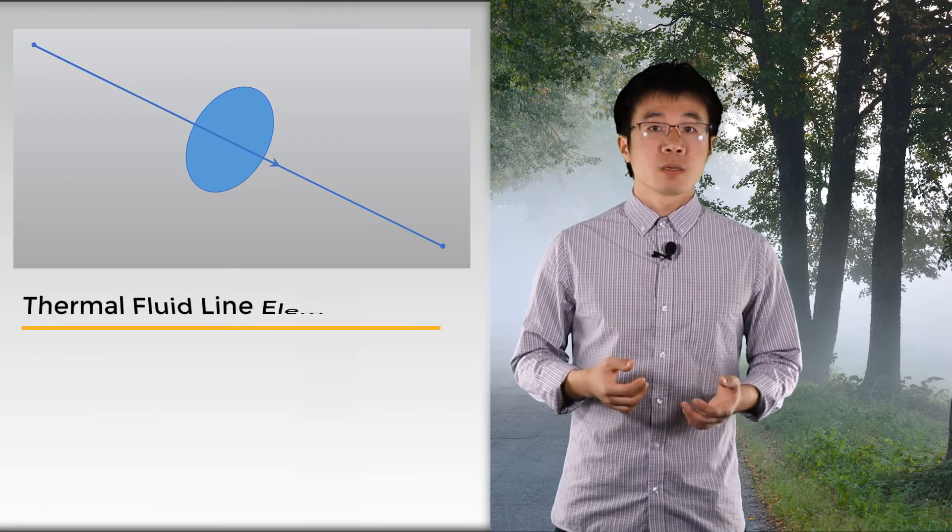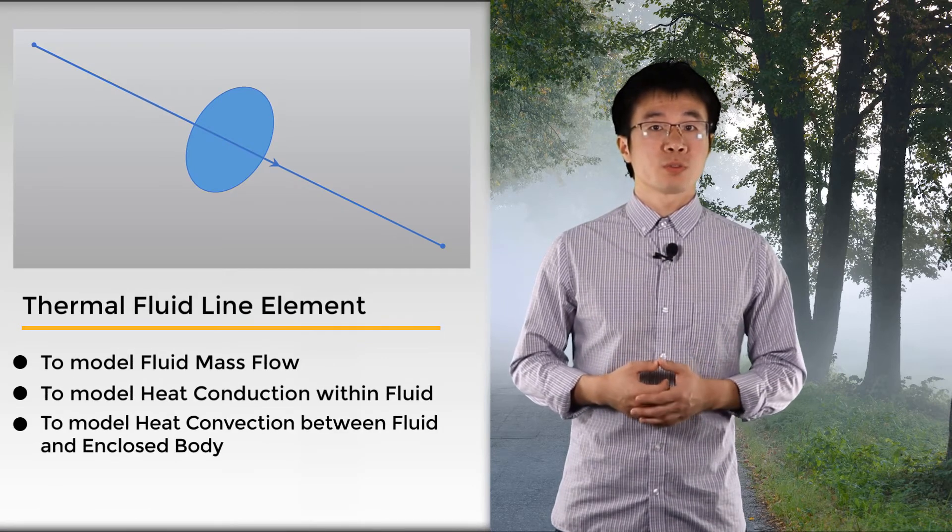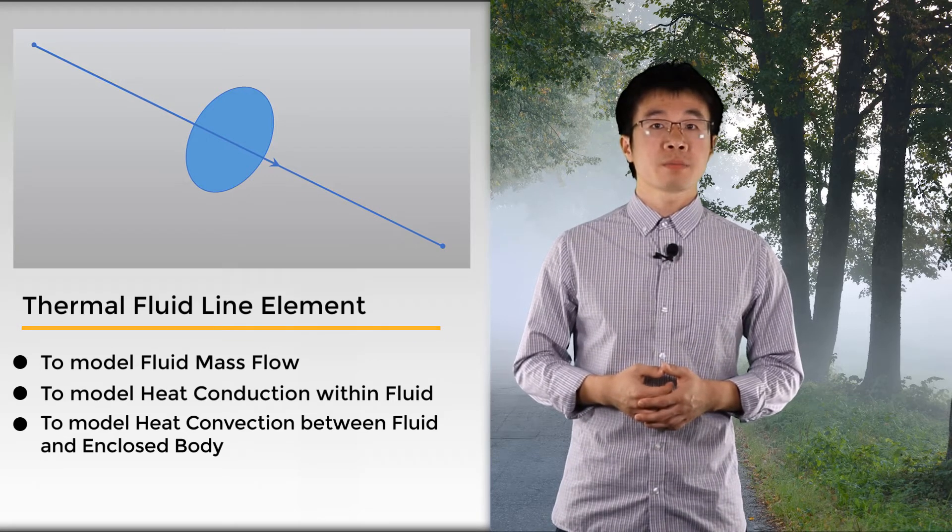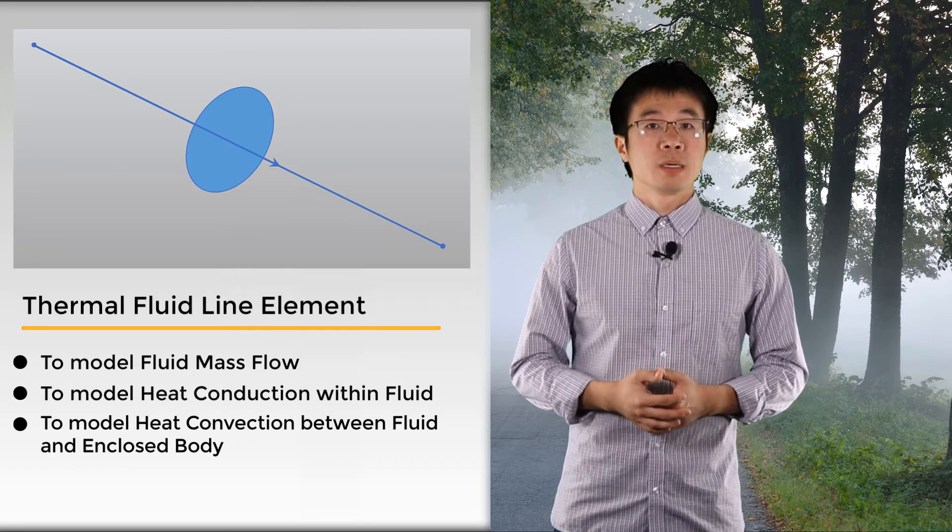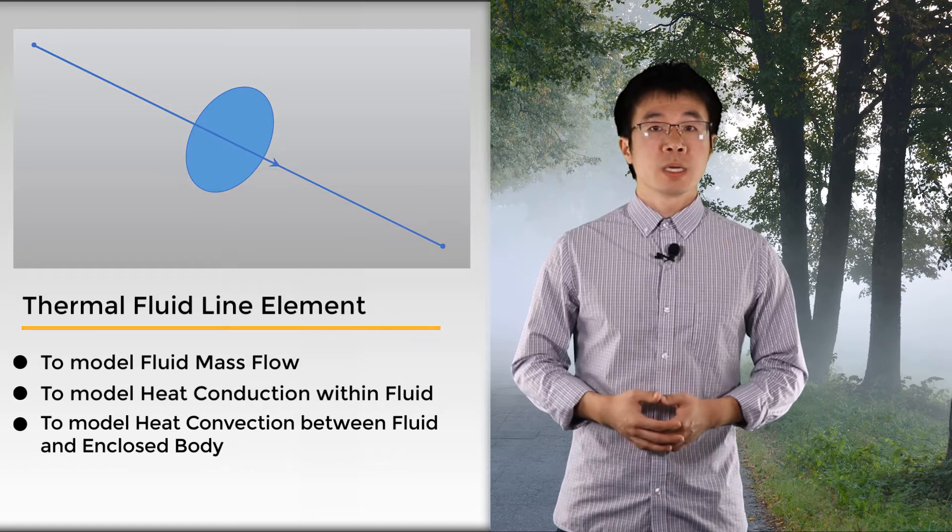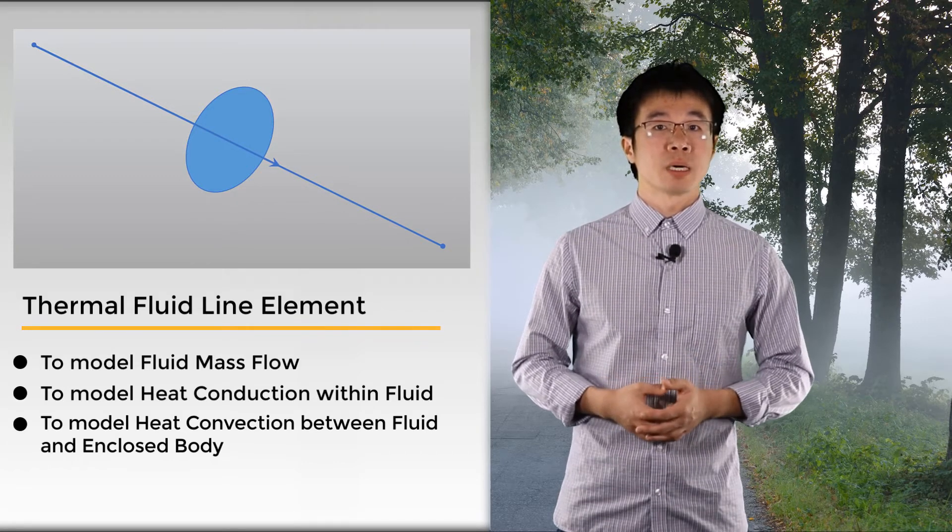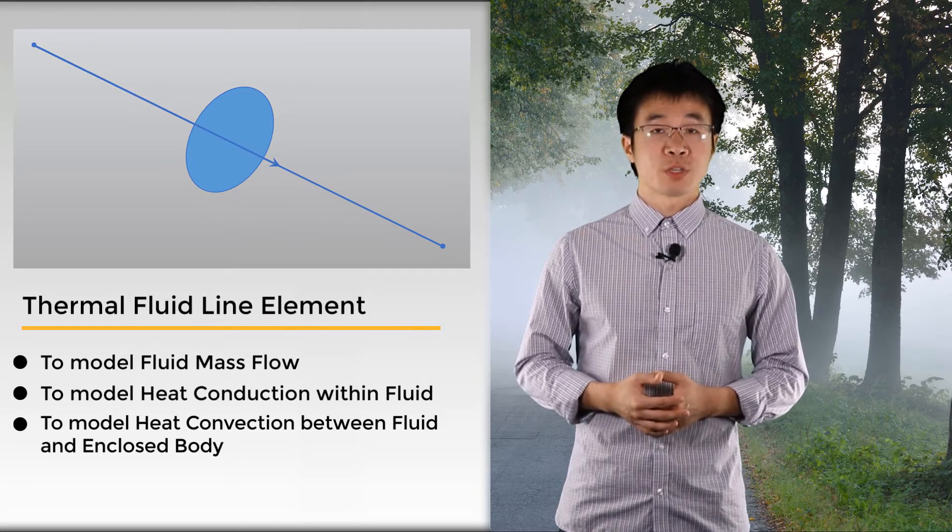However, CFD is computationally expensive. Alternatively, one can use 1D thermal fluid line elements to model the fluid mass flow in pipes and heat convection in the conduction-based solver, such as ANSYS Mechanical. These elements can provide sufficient accuracy of the mass flow, heat conduction within the fluid, and convection between the fluid and the enclosing body, while its biggest advantage is its cost efficiency.